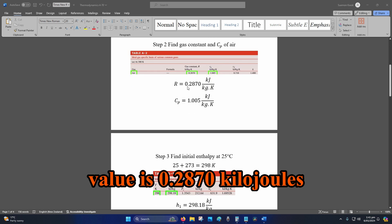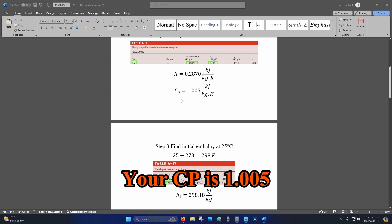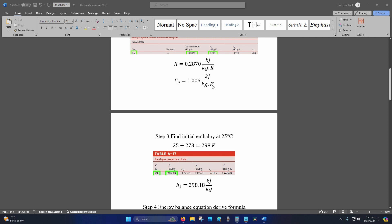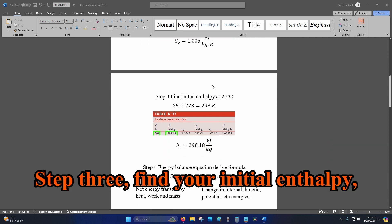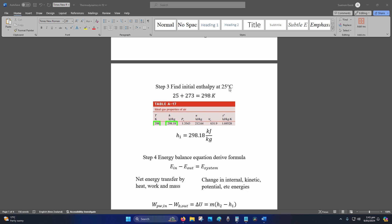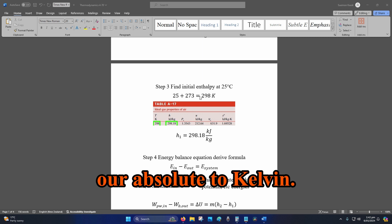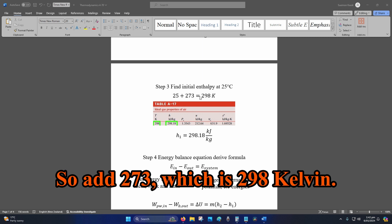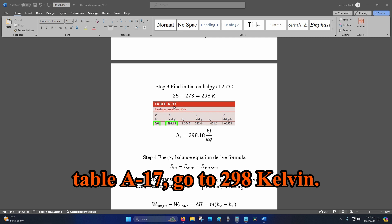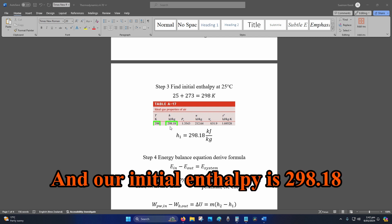Step three: find your initial enthalpy, which is your h1 at 25 degrees Celsius. We convert that to our absolute temperature, to Kelvin, so add 273, which is 298 Kelvin. From there we go to table A-17, go to 298 Kelvin, and our initial enthalpy is 298.18 kilojoules per kilogram.